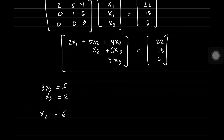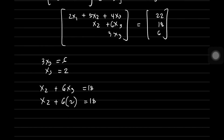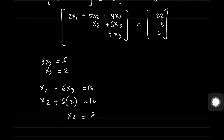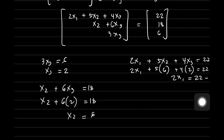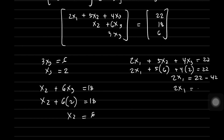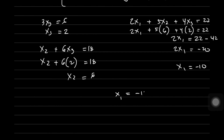From the second equation: X2 + 6X3 = 18. Substituting X3=2: X2 + 12 = 18, so X2 = 6. From the first equation: 2X1 + 5X2 + 4X3 = 22. Substituting X2=6 and X3=2: 2X1 + 30 + 8 = 22, so 2X1 = 22 − 42 = −20, therefore X1 = −10. Summarizing: X1 = −10, X2 = 6, X3 = 2.